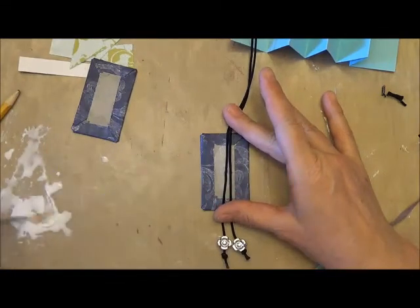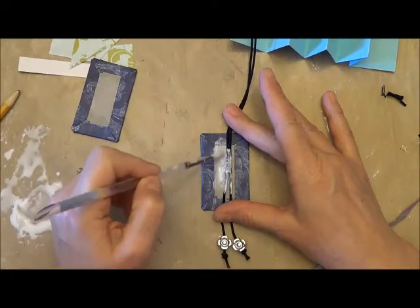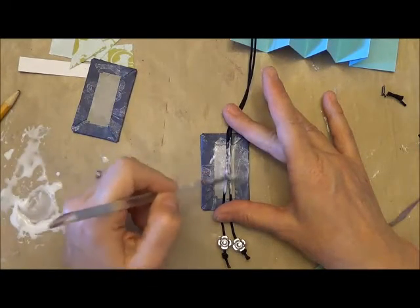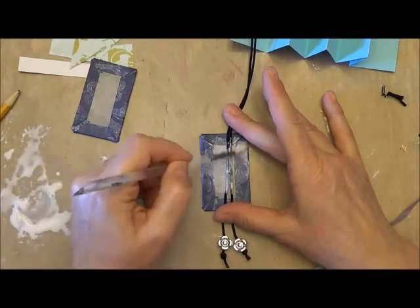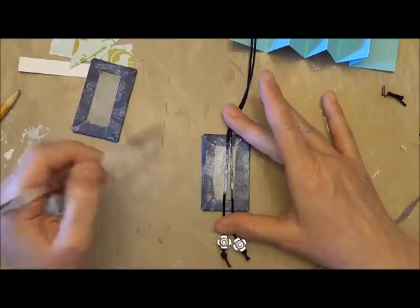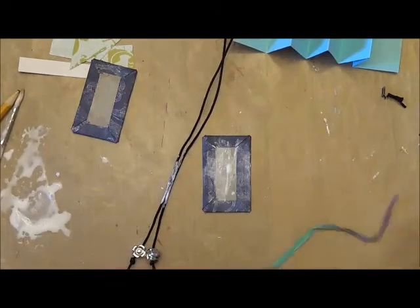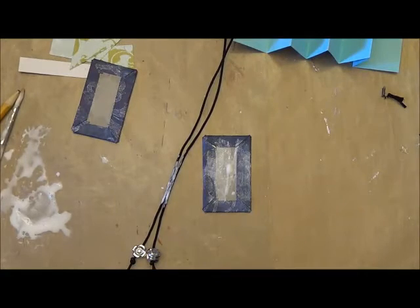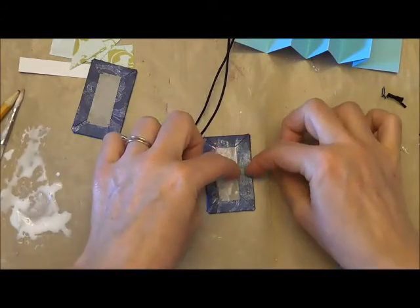So again, we're going to take our glue. We're going to put glue all along the base. Actually, let's put a ribbon down first. Find the halfway point. Add that right on your book.